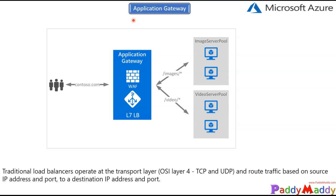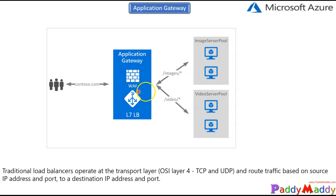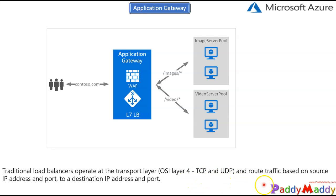As a first point, let's understand Application Gateway. Azure Application Gateway is a web traffic load balancer which works at Layer 7, and it enables you to manage traffic for your web applications. A traditional load balancer purely works at OSI Layer 4 — routing traffic based on source IP address, destination IP, TCP or UDP ports — whereas Application Gateway is specifically designed for web applications.